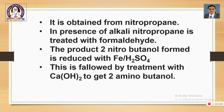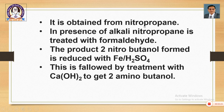Now let us see the chemistry. You should go through the concept in detail as it will be useful for answering possible exam questions. The first question that may arise is: from what is this compound obtained? It is obtained from nitropropane. In the presence of alkali, nitropropane is treated with formaldehyde — the first step is treatment of nitropropane with formaldehyde.